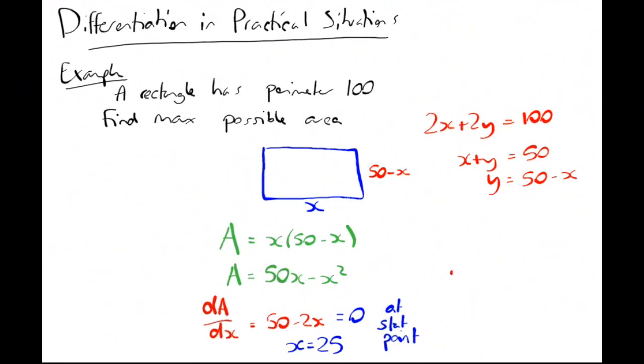That gives us that the two sides are 25 and 25. So the maximum possible area of a rectangle is a square with sides 25, which is 625.